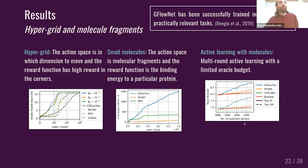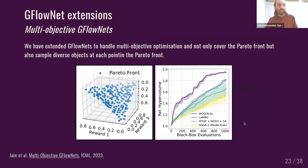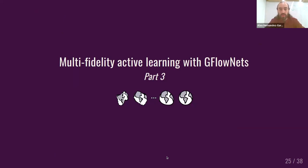I'm going to skip this slide in the interest of time, but it essentially shows various results from the original paper, including results on the hypergrid and small molecules. There are also slides showing how we can extend GFlowNets to do multi-objective exploration — I'll share the link to the slides later. We have also extended the theory originally proposed for discrete spaces to continuous spaces as well, about a year ago, and it works pretty well there too. But for the rest of the talk, I would like to talk about multi-fidelity active learning and how we are using this to tackle scientific discovery problems.